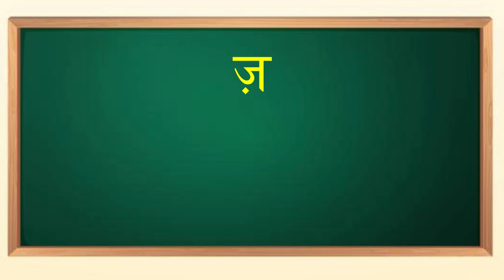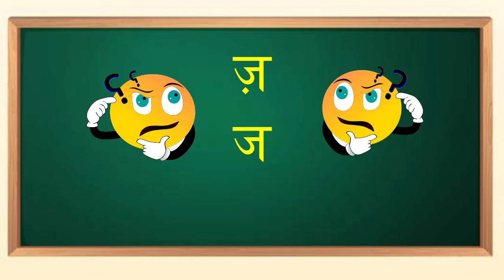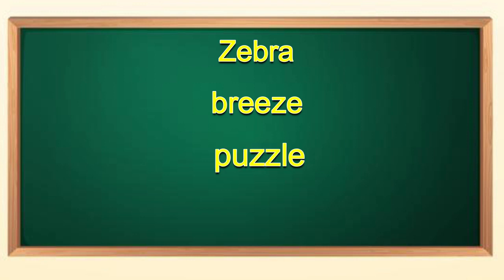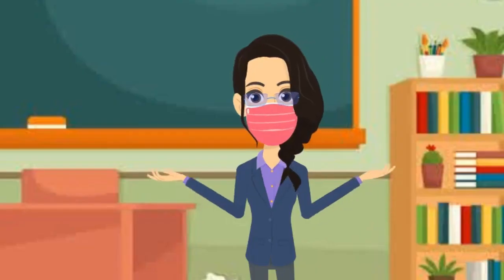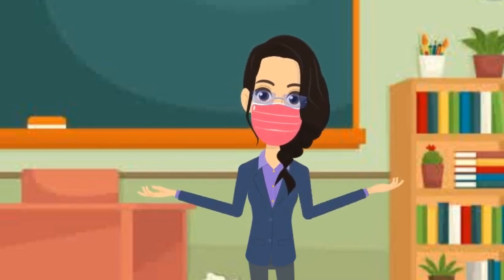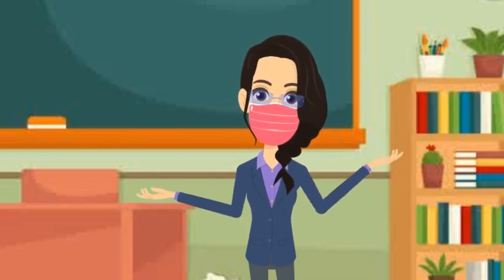Isi tarah kai logon ko 'ज' aur 'z' ke sound mein bhi dikkat aati hai. Zebra ko 'jibra' kehte hain, breeze ko 'brij' kehte hain, puzzle ko 'pajal' kehte hain, please ko 'plij' kehte hain. Aise kuch shabdon ke sahi uchhaaran ka bhi abhyas kar lena chahiye.